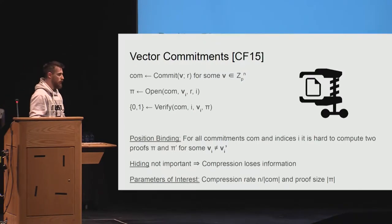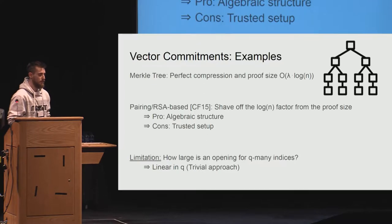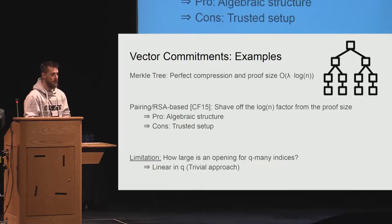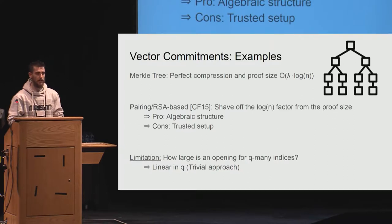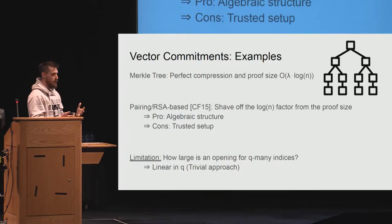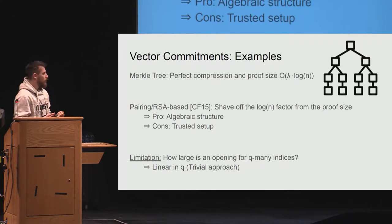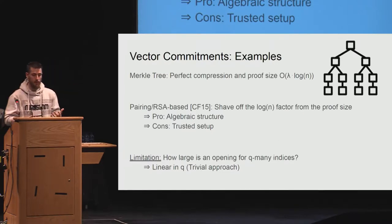The proof size is going to be the focus of this talk. The first example everybody is familiar with is the Merkle tree, which is very nice because it has perfect compression rate, and you can give proofs of membership with size lambda log n, where n is the size of the database. A recent work of Catalano and Fiore at PKC 2015 showed how to shave off this additional log n factor by leveraging algebraic structure. They introduced two schemes—one from CDH in bilinear groups and one from RSA—showing a proof of size O(lambda).